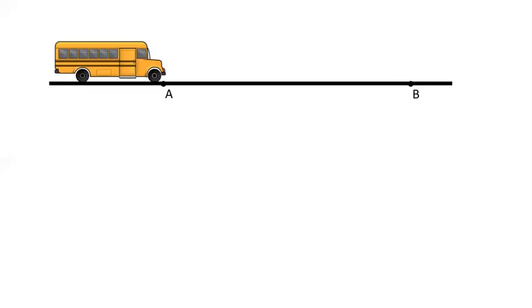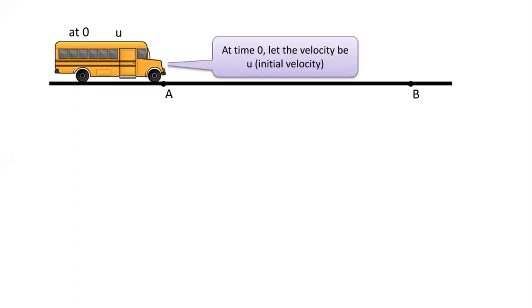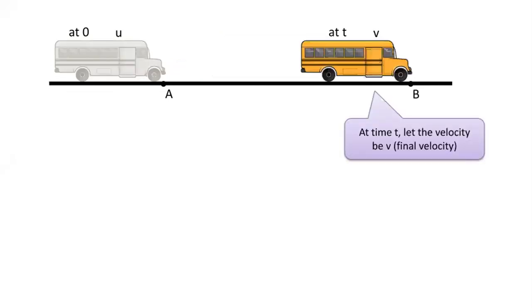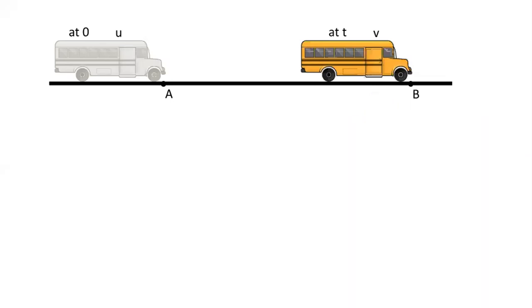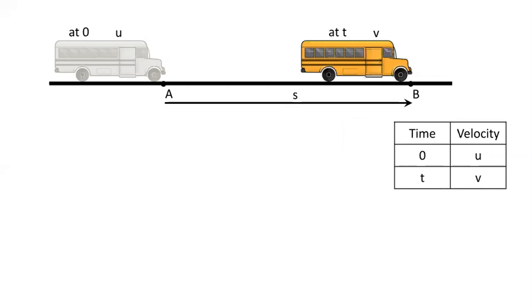We had point A and we had point B. When I started the object, the time was zero. I noticed that the velocity of the object is U, that is initial velocity. Then I had uniformly accelerated the object, and at time T I saw that the velocity has changed. So I have a table of time versus velocity. At time zero the velocity was U, and when the time was T my velocity became V.